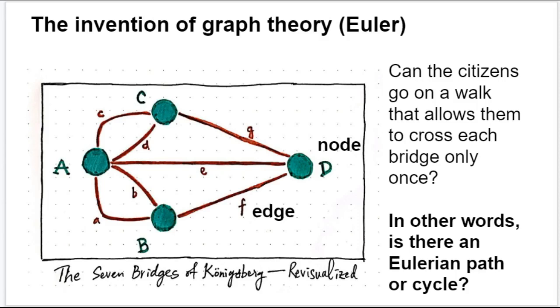And the question again is, can the citizens go on a walk that allows them to cross each bridge only once? Coming up with drawing that problem like this as a way of depicting it, that was an advancement in mathematical theory, and in fact the beginning of the branch of math known as graph theory.